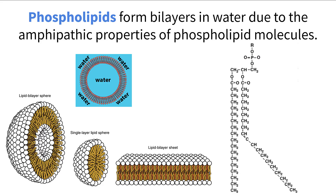When learning about cellular biology, it is important to understand the specifics about the cell membrane. This structure provides a barrier that separates the internal components of the cell from the exterior, and also controls what moves in and out. Let's go over a few important details about how this works.